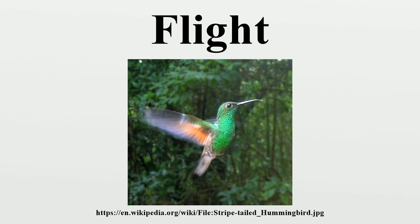Those of insects are hypothesized to be highly modified versions of structures that form gills in most other groups of arthropods. Bats are the only mammals capable of sustaining level flight. However, there are several gliding mammals which are able to glide from tree to tree using fleshy membranes between their limbs. Some can travel hundreds of meters in this way with very little loss in height.